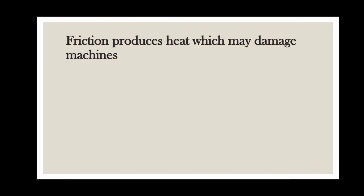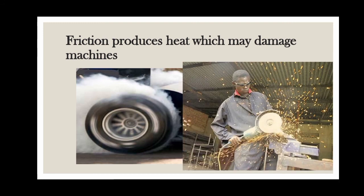The next disadvantage: friction produces heat which may damage machines. If we rub our hands together quickly for a few seconds, they feel warm because friction between the hands produces heat. Similarly, when we operate a mixer grinder for a few minutes, its jar becomes hot — heat is again produced by friction. When the moving parts of a machine rub together, a lot of heat is produced due to friction, and this heat may damage the machine gradually.